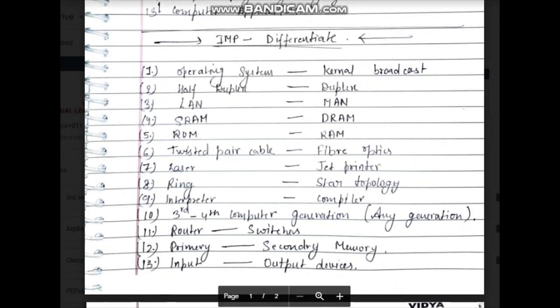It is important to differentiate. You will get differentiation questions on kernel vs. operating system, half duplex vs. full duplex, LAN vs. MAN vs. WAN. Also important are SRAM and DRAM — Static RAM and Dynamic RAM — as well as ROM vs. RAM distinctions.